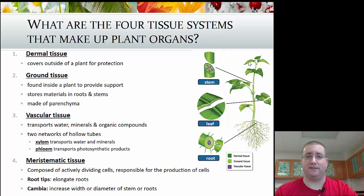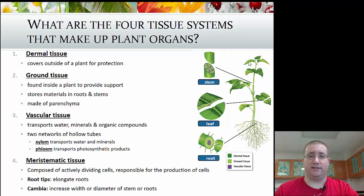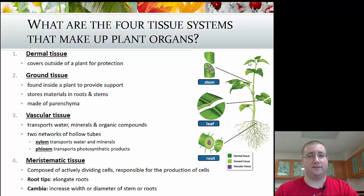The final tissue type is known as meristematic tissue — actively dividing tissue. The first three tissue types are no longer dividing; they're at maturity. Meristematic tissue is found in root tips to elongate those roots and search for water, and in the cambia — the part of the stem that extends outward and widens. If you think of the rings of a tree, that's the cambium, made of meristematic tissue that helps widen the stem for support.